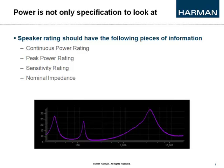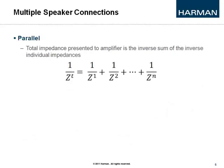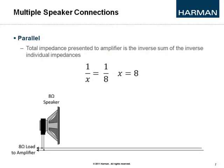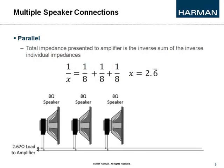If you hook up speakers in series, the total impedance presented to the amplifier is the sum of the individual impedances — the signal must go through the first device and then the second before returning to the source. If you hook them up in parallel, the total impedance is the inverse sum of the inverse individual impedances. For example, one 8-ohm speaker presents an 8-ohm load; two 8-ohm speakers in parallel present a 4-ohm load; three present a 2.6-ohm load.